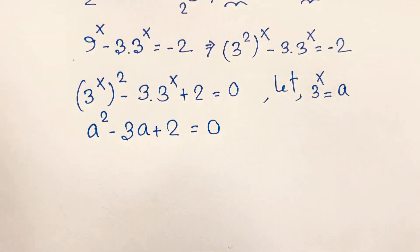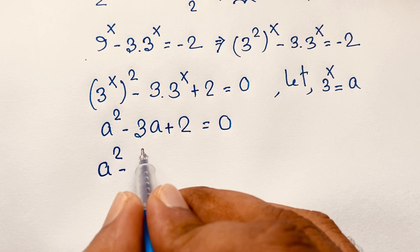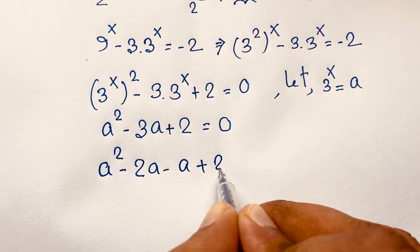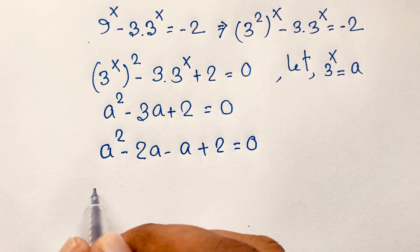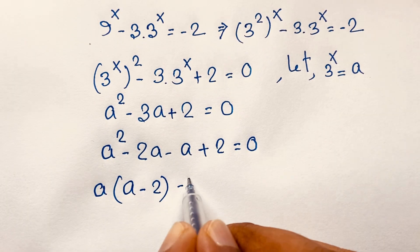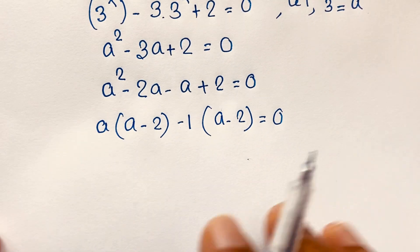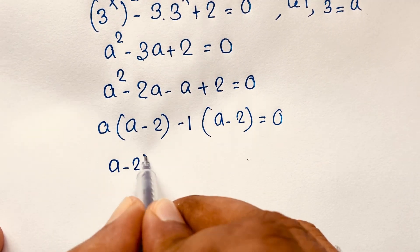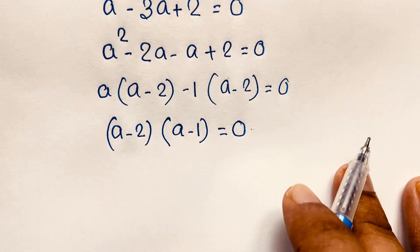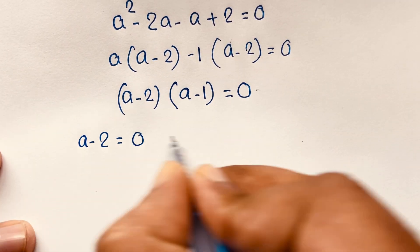At this point, using middle-term factoring: a squared minus 3a plus 2 equals 0 becomes a squared minus 2a minus a plus 2 equals 0. Taking a as common: a times (a minus 2), and minus 1 is common from the remaining terms: minus 1 times (a minus 2) equals 0. So (a minus 2)(a minus 1) equals 0.